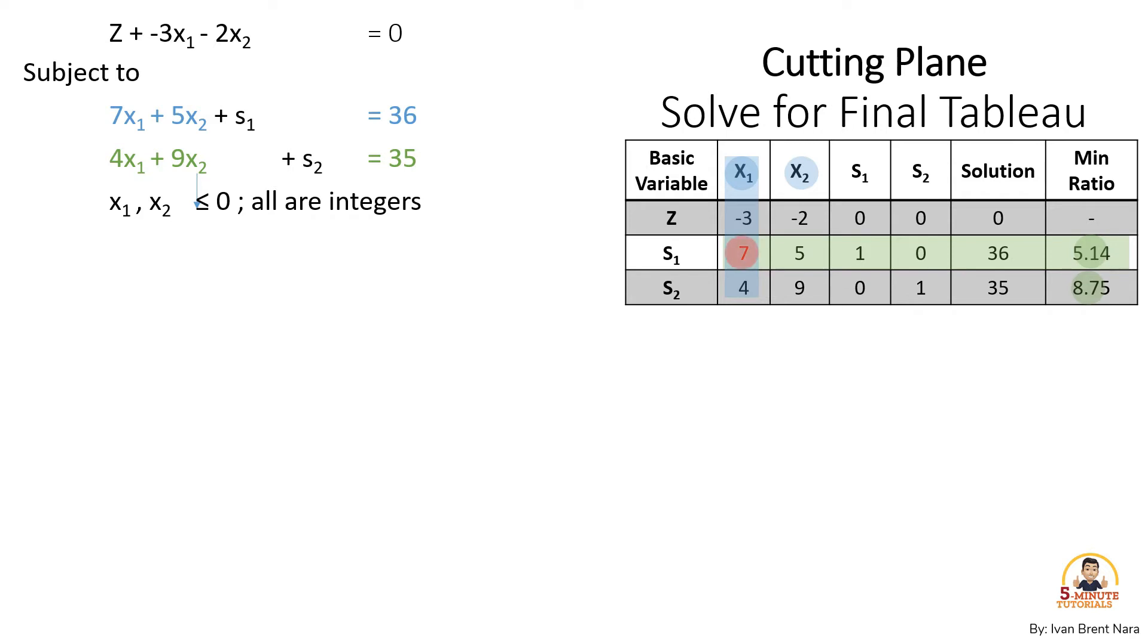Thus, we will consider row 3 as the pivot row and column 2 as the pivot column and having 7 our pivot element. Then we are now ready to solve using Gaussian elimination. Divide row 3 with 7 to have our pivot element equals 1.